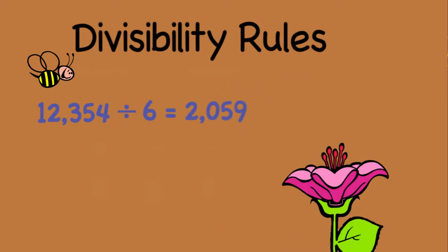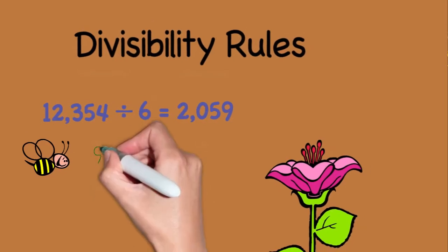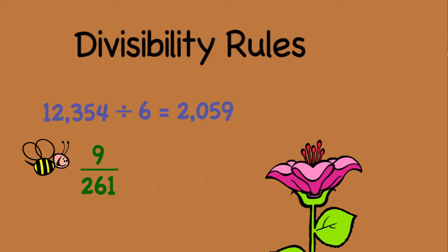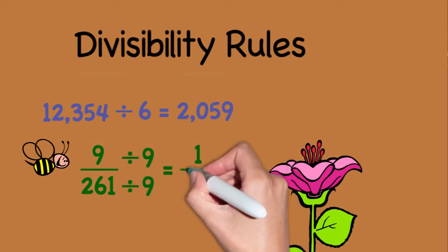So why do we care? Well, divisibility rules can help us reduce fractions. For example, if we are asked to reduce the fraction 9 over 261, it is helpful to know that 261 is divisible by 9. 9 divided by 9 is 1, 261 divided by 9 is 29.